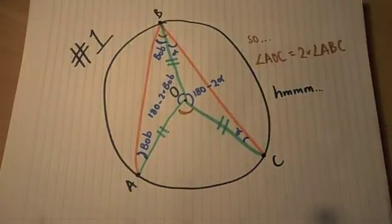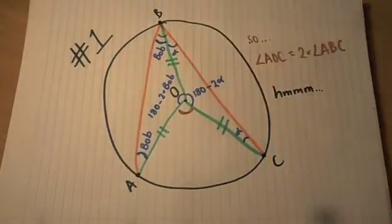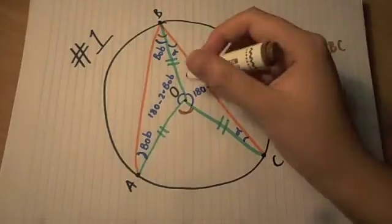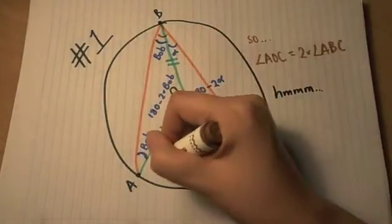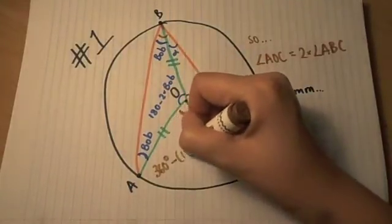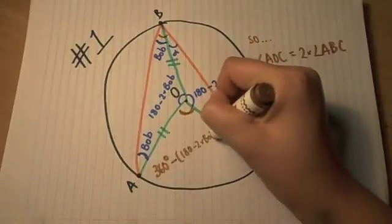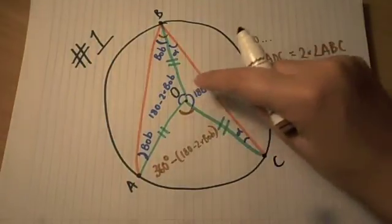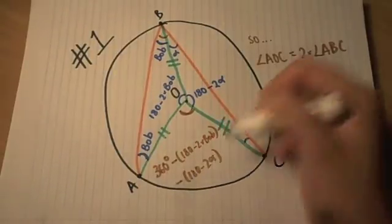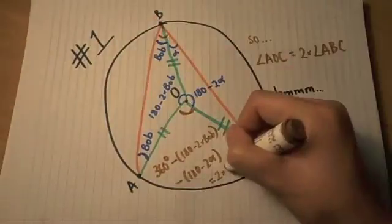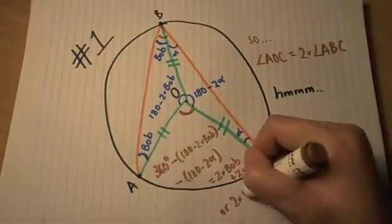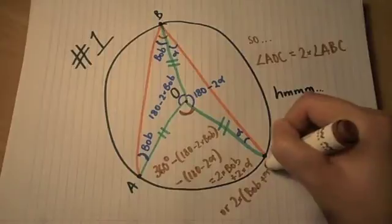Now, what about this brown angle down here? Well, we know that the three angles around O must sum to 360 degrees. So, this brown angle is just 360 degrees minus my 180 minus 2 times Bob, then minus my 180 minus 2 alpha. With some magic and speedy simplification, that comes out to be 2 times Bob plus 2 times alpha, or 2 times bracket, Bob plus alpha.